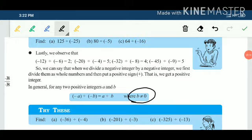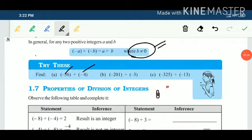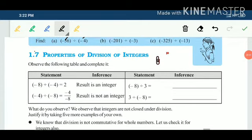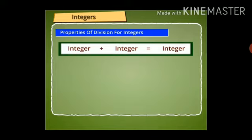So when a negative integer is divided by a negative integer, we simply divide the whole numbers and the answer is always positive. One condition: the denominator should not equal zero, because any number divided by zero is a non-defined term. Some try-these are given — negative divided by negative, just divide the whole numbers, answer is positive.